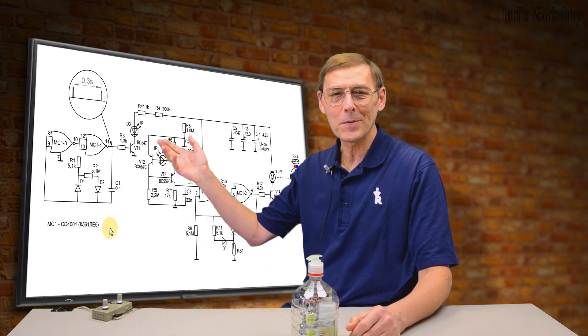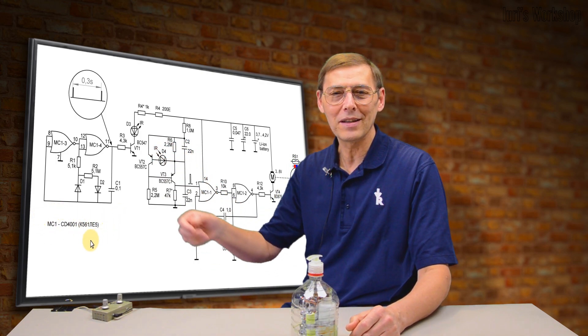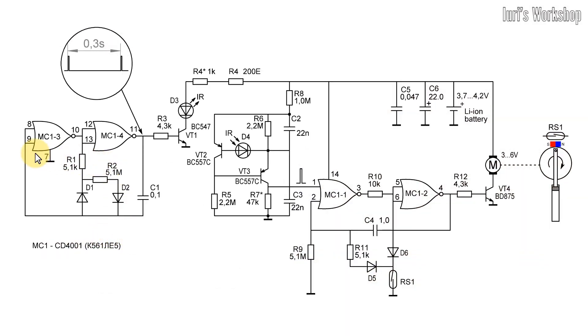The pump is controlled by a simple circuit based on 4 NOR elements. A short pulse generator is assembled on 2 NOR elements, to which an infrared LED is connected.